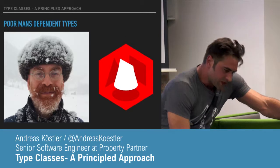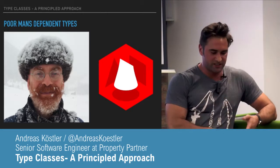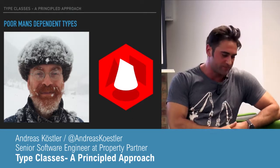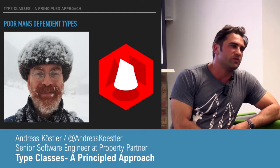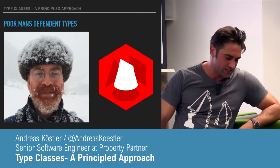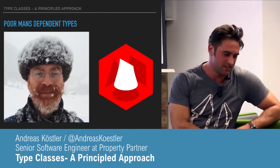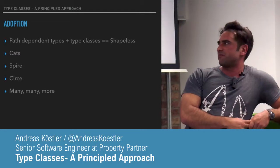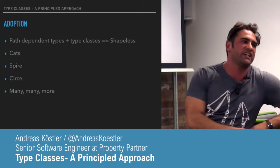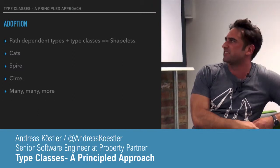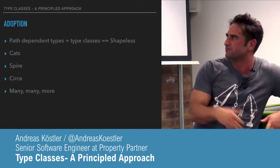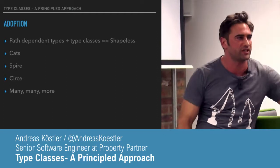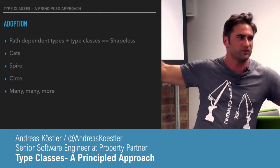A combination of path-dependent types, singleton types, and type classes gives us a quite limited form of dependent types. If you want to know more about that, I highly recommend browsing or using shapeless. The type class libraries — shapeless, cats, spires — are all fairly well known and they all heavily rely on type classes.